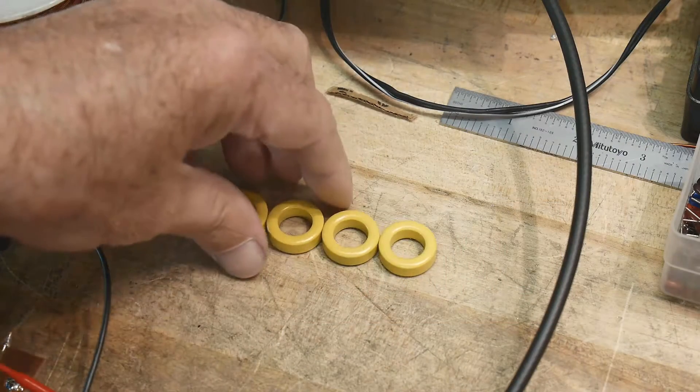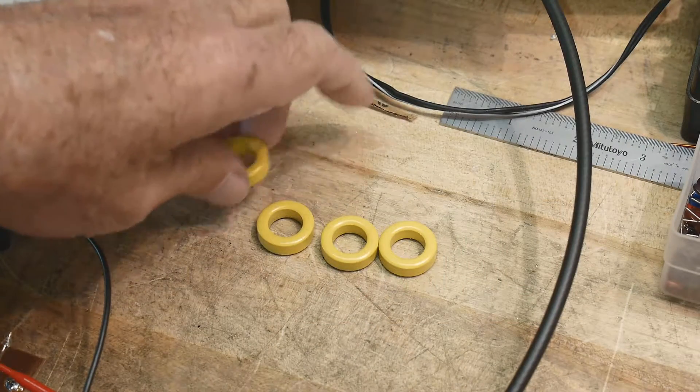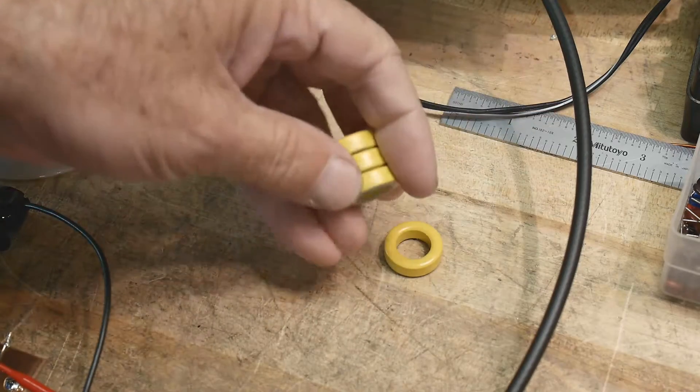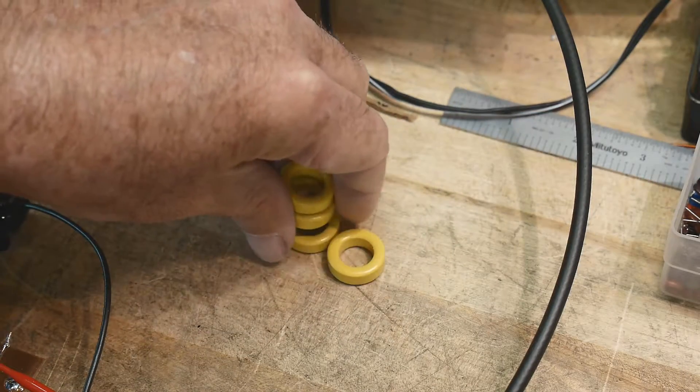So in my previous video I mentioned I got these iron core toroids, not ferrites, iron core toroids.